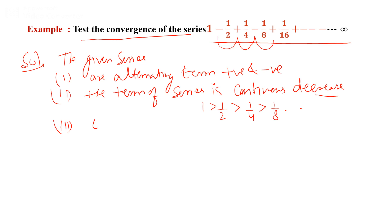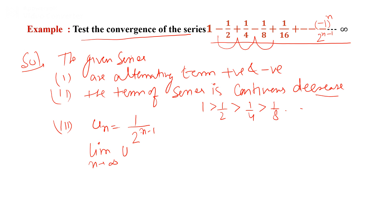Third, write the nth term. The nth term is (-1)^n / 2^(n-1), so the absolute nth term is 1/2^(n-1). Apply the limit as n tends to infinity: limit of 1/2^(n-1) = 1/∞ = 0.